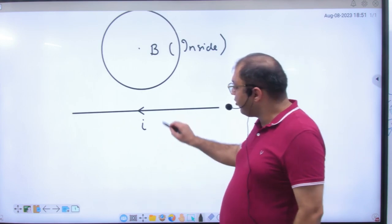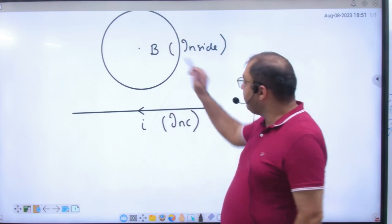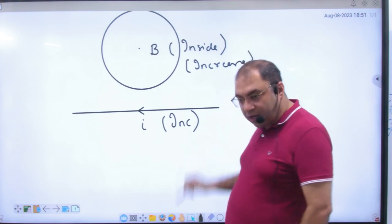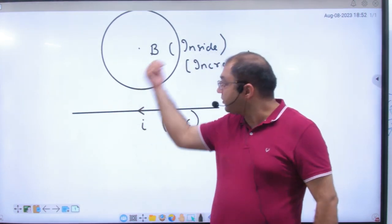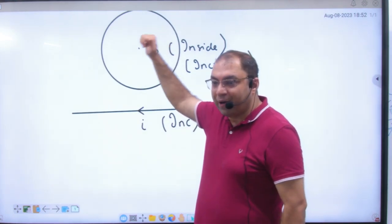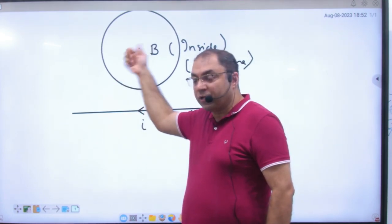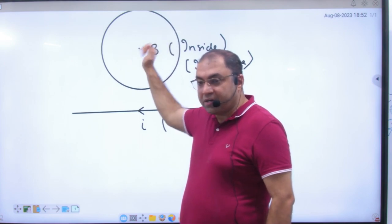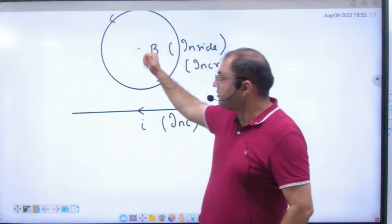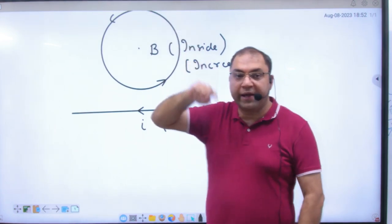Suppose current here is increased. B is inside and increasing. The coil says: B is increasing inside — I will create a current such that B generates outward to oppose it. So this coil generates current, B comes out, and current is anti-clockwise. So if asked what current will happen, we say anti-clockwise.